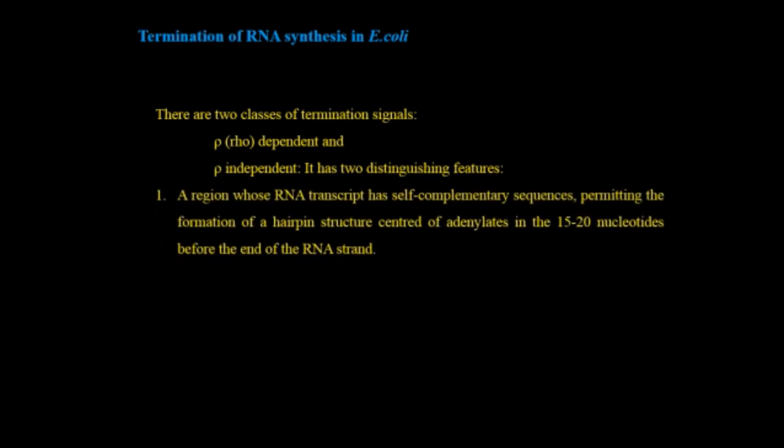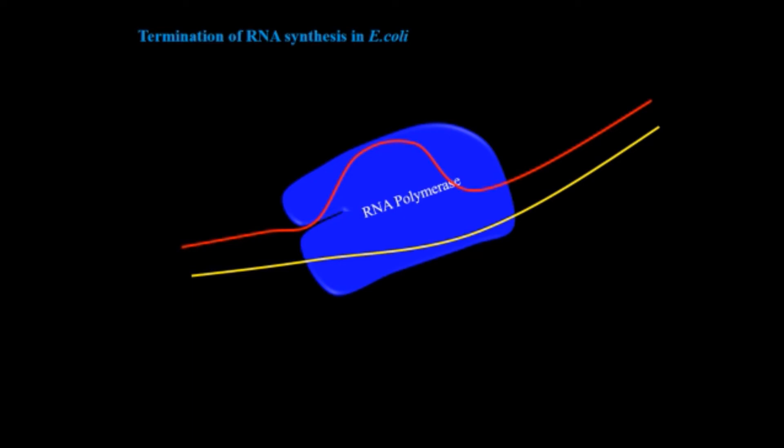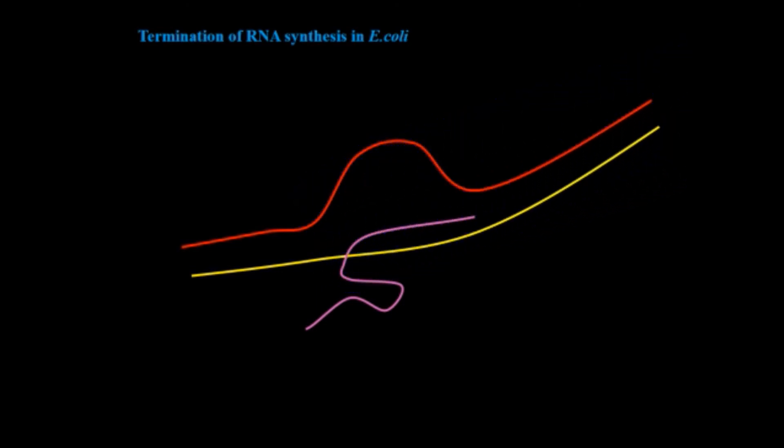Termination of RNA synthesis in E. coli: After initiation, it is followed by elongation and termination. There are two classes of termination signals, one is Rho-dependent and other is Rho-independent. Rho-independent has two distinguishing features: one is that the region whose RNA transcript has self-complementary sequences permits the formation of a hairpin structure centered on a string of adenylates in the 15 to 20 nucleotides before the end of the RNA strand. Second is that there is a short string of adenylates in the template strand that are transcribed into uridylates at the 3 prime end of the RNA. This hairpin loop structure lets the RNA polymerase to bypass and this terminates the transcription.